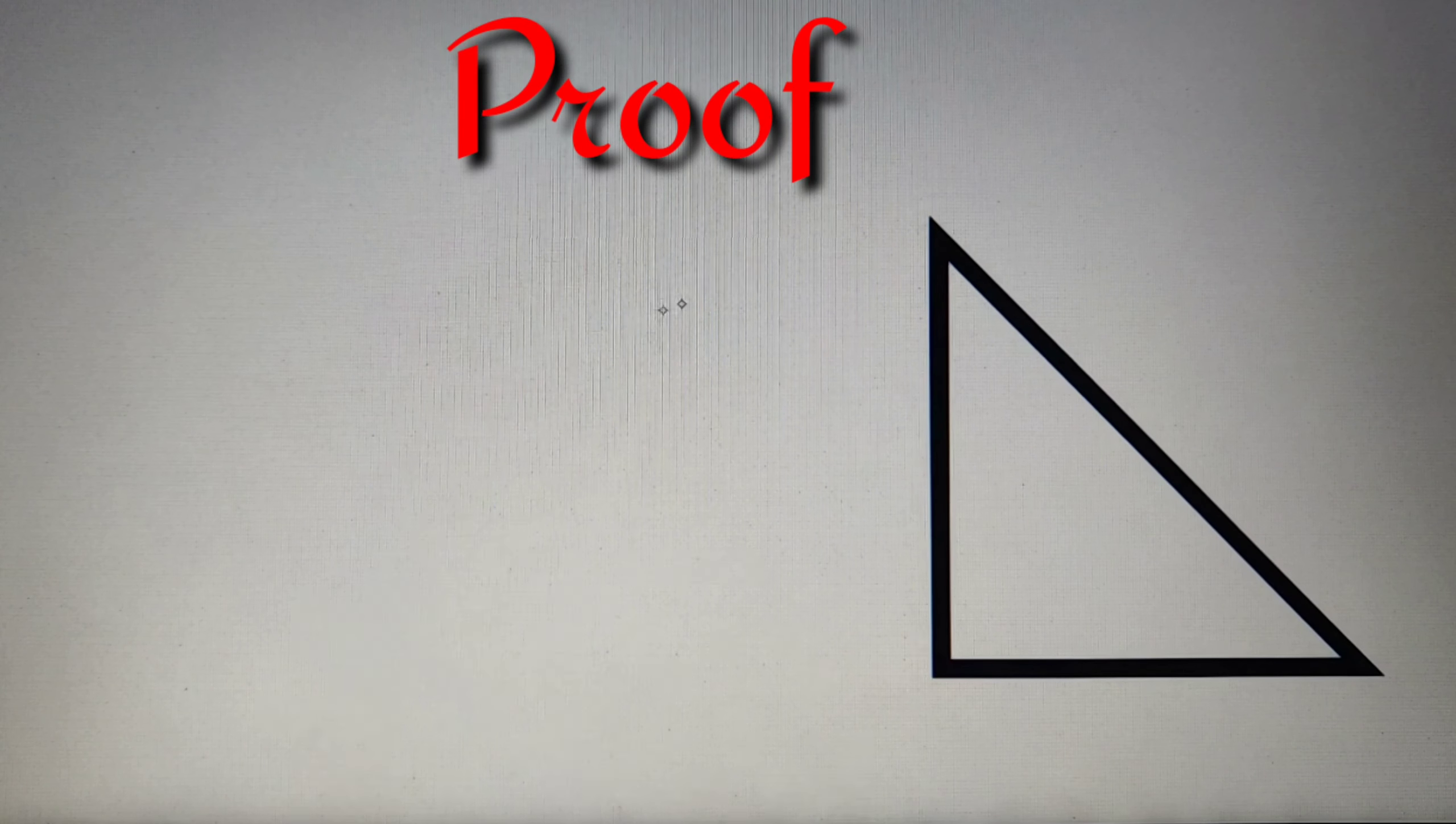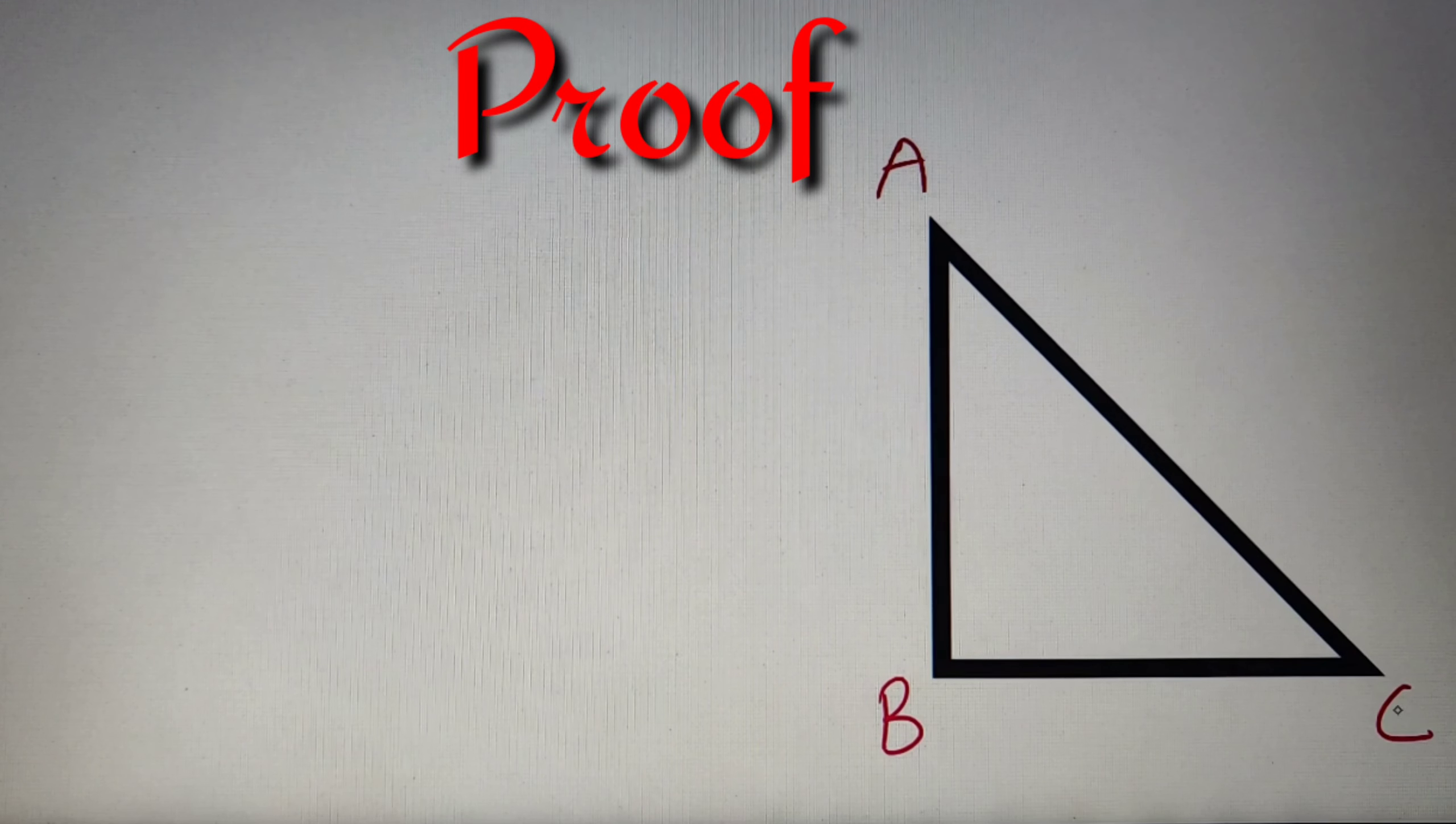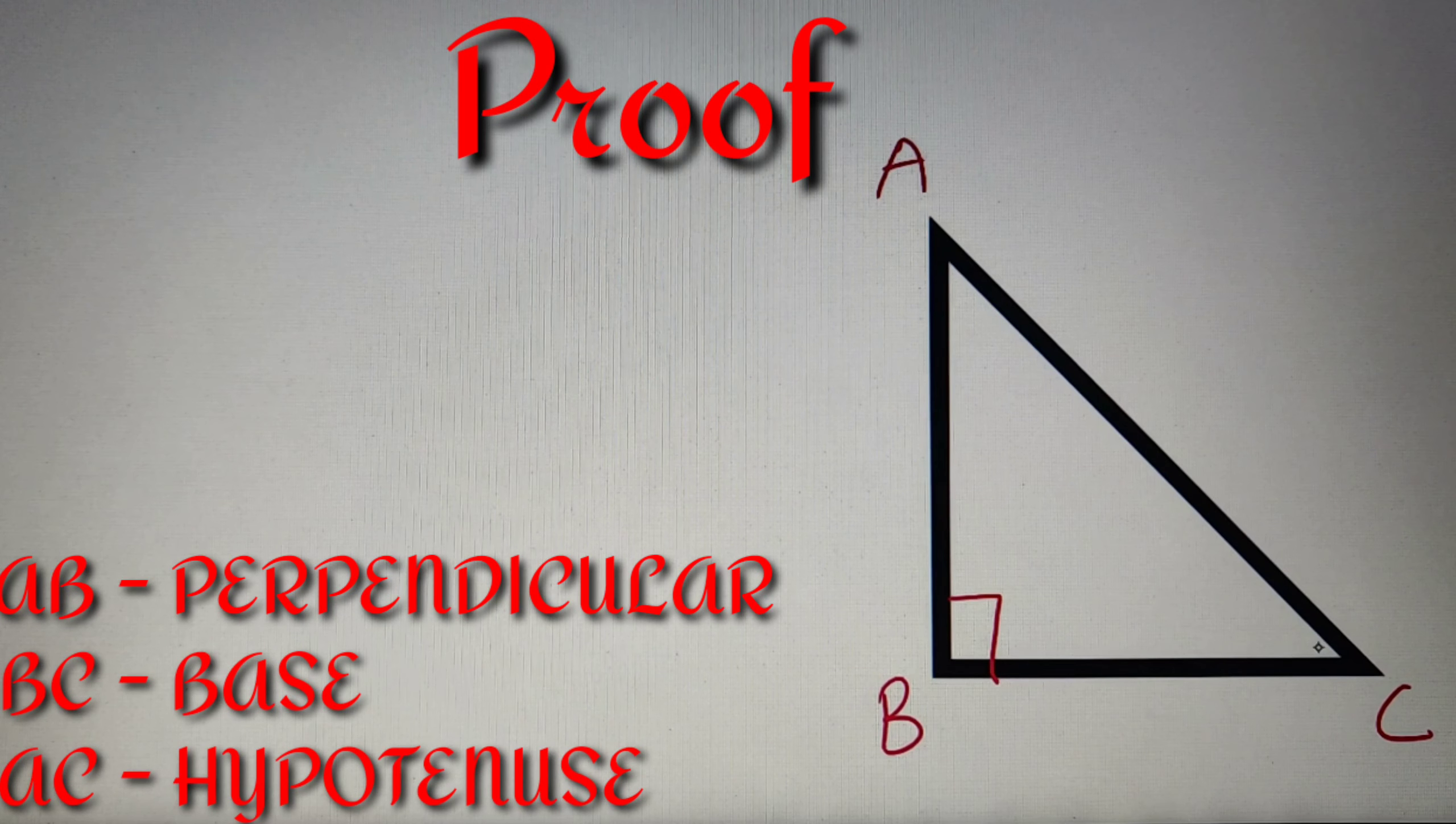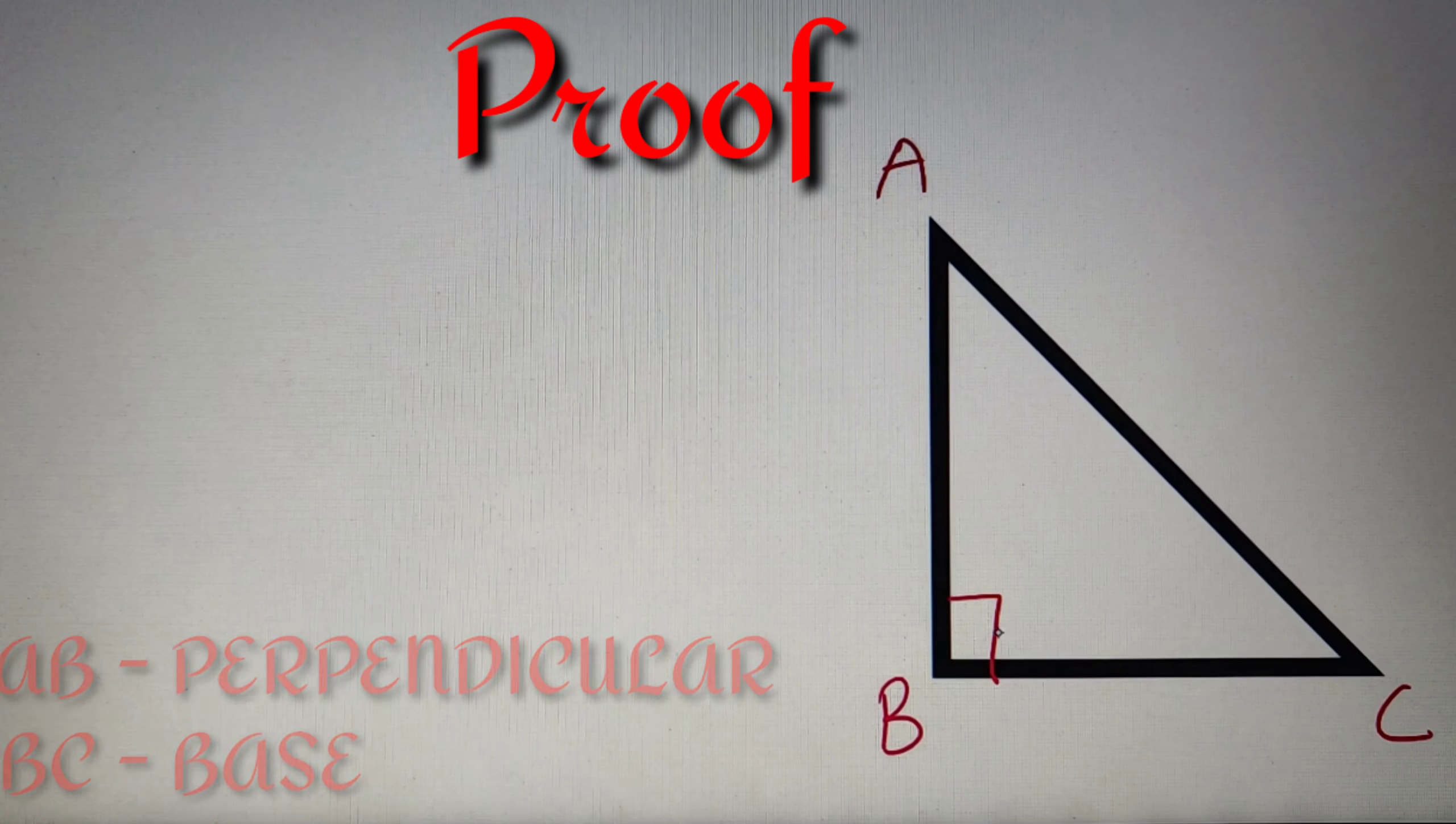So as we are dealing with a right-angled triangle, we have taken a right-angled triangle and let's name its vertices as A, B and C respectively. We can see that AB will be our perpendicular, BC will be our base and AC is our hypotenuse if we take the right angle at the vertex B.